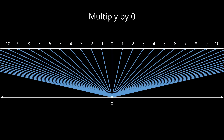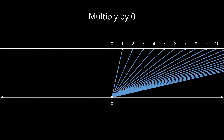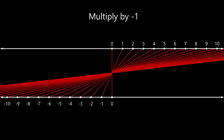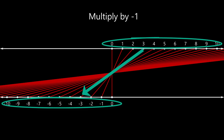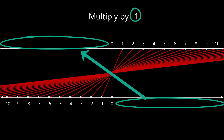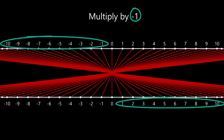So now what happens if we continue the pattern? What happens if we scale by a negative number? We know that a positive number times a negative number will be a negative number. So if we do that, we will end up mapping the positive end on the right side of 0 to the left side of 0, to the negative numbers — we are flipping the numbers on the right side to the left side. Now consider the negative numbers on the top number line being multiplied by a negative one — a negative times a negative — and that is mapping to the positive numbers on the second number line. Therefore, a negative times a negative is a positive.